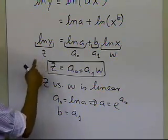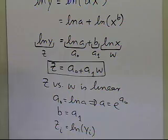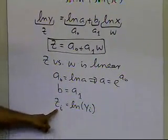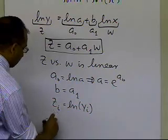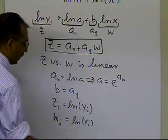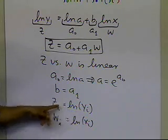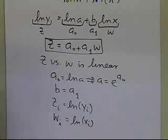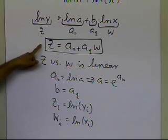To use the linear regression formulas, you must transform the data. The zi values will be the log of the yi values — you take the natural log of all your y values to generate the z values. Similarly, the wi values will be the log of the xi values. You transform the original y versus x data into z versus w data by taking the natural log of both y and x.